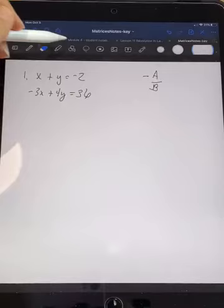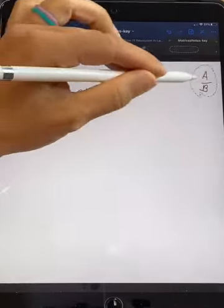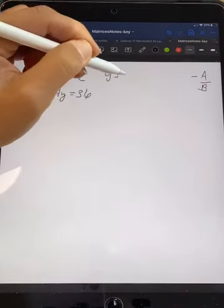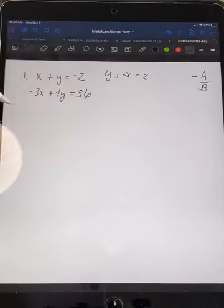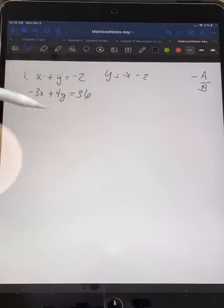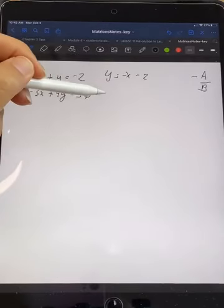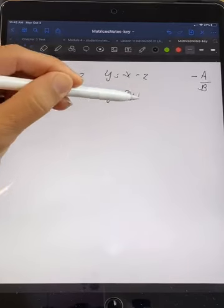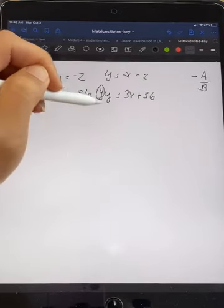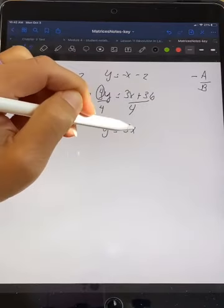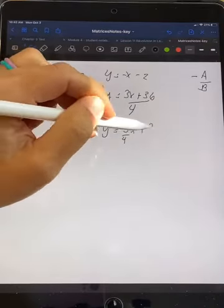So in the first one, we have y is equal to negative x minus 2. I've just got y by itself, so I moved x over. In this other one, we've got a little bit more to work on. I'm going to move my 3x over. So initially, I'm going to have 4y is equal to 3x plus 36. I divide both sides by 4. So I have y equals 3 fourths x plus 9.